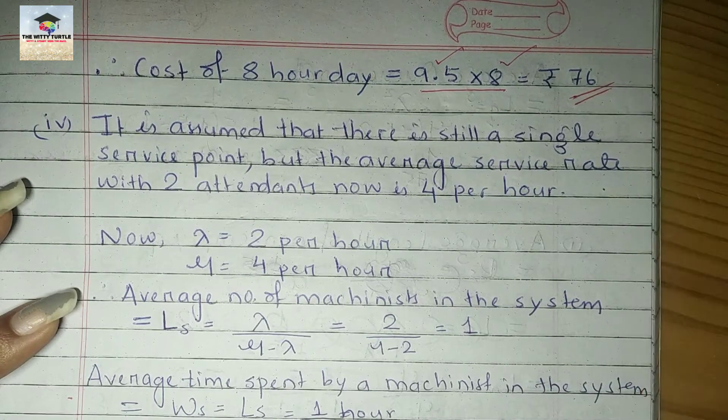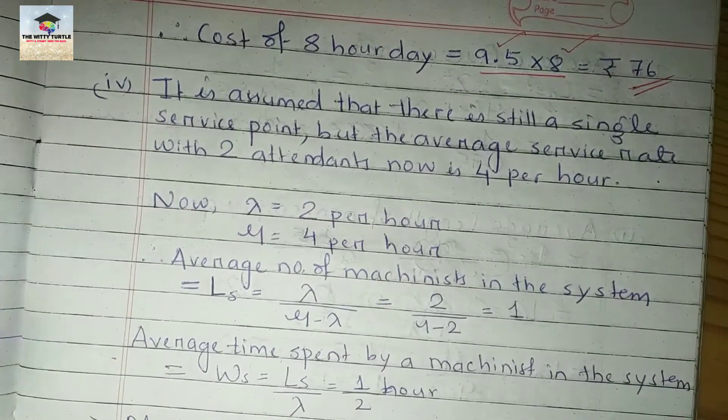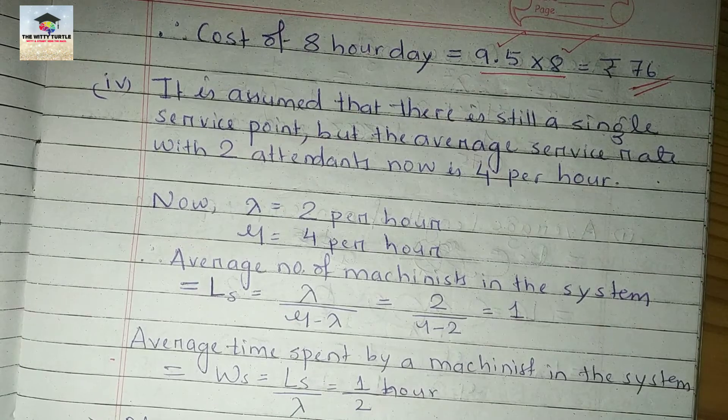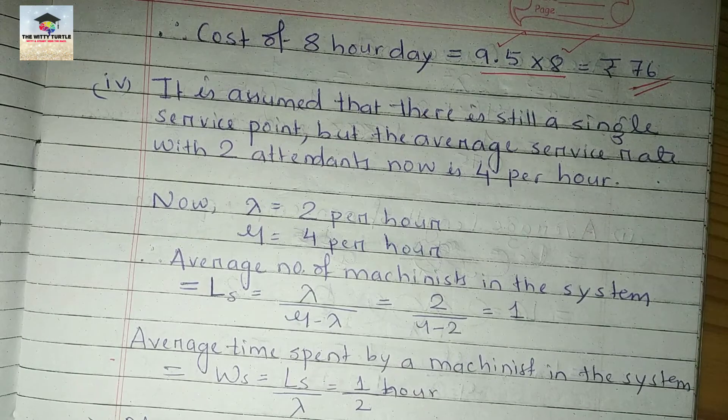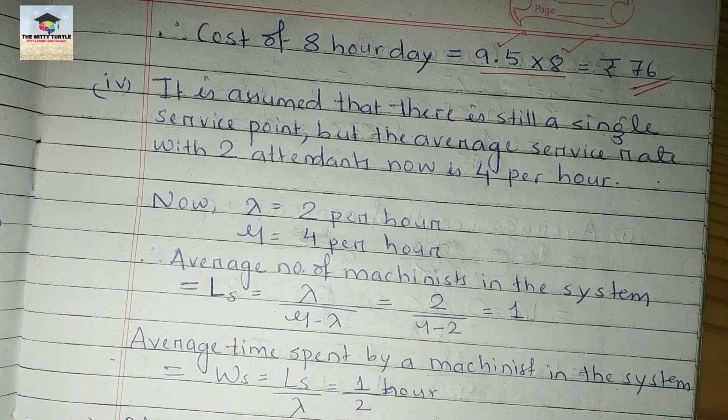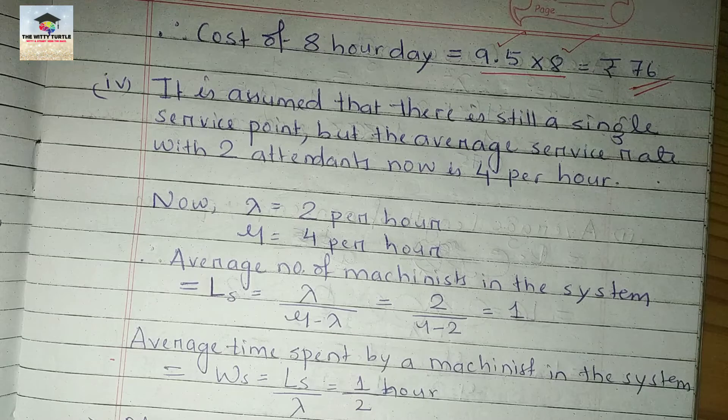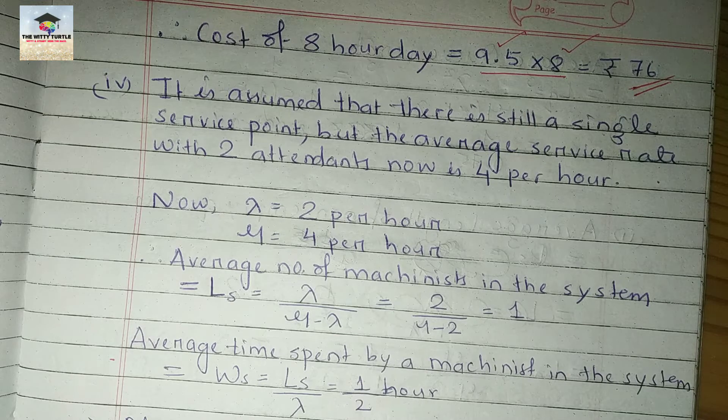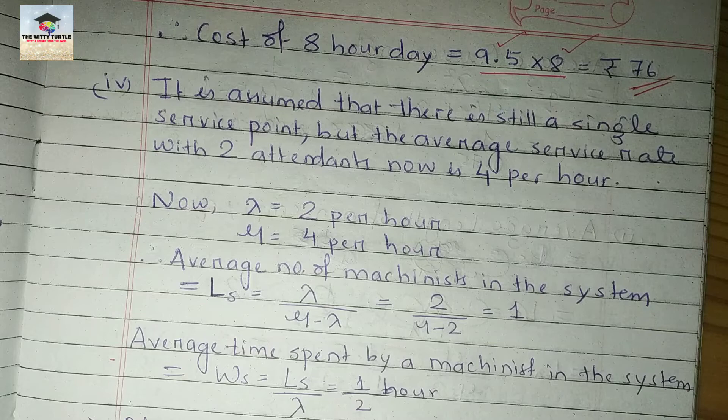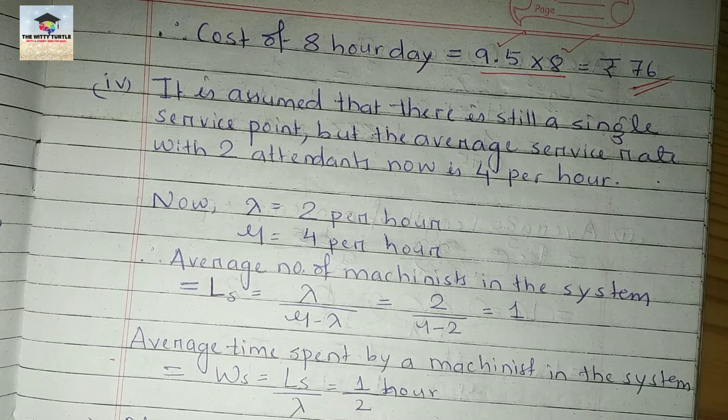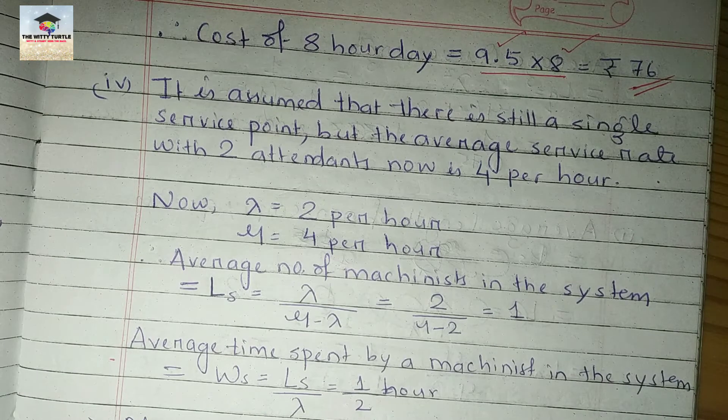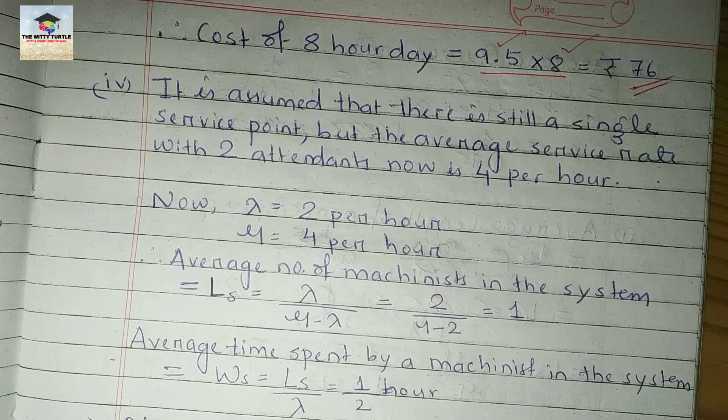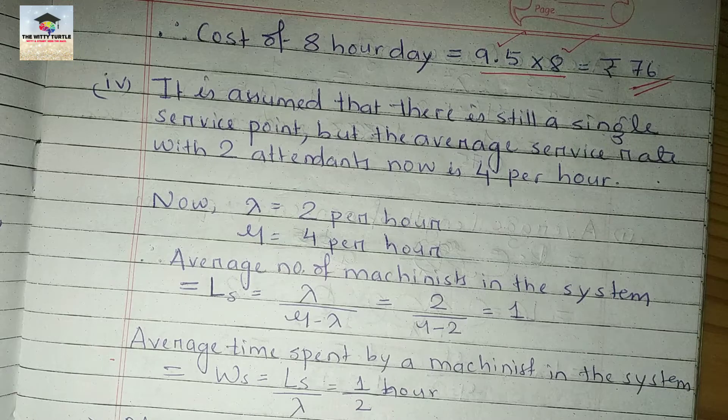Now the cost for 8 hours a day will be the total 9.50 rupees times 8 hours, which sums up to 76 rupees. Coming to the fourth point, here it is said that the cost of the system if there are 2 attendants working together as a team, each being paid 1.50 rupees per hour, and each able to service on average 2 per hour.